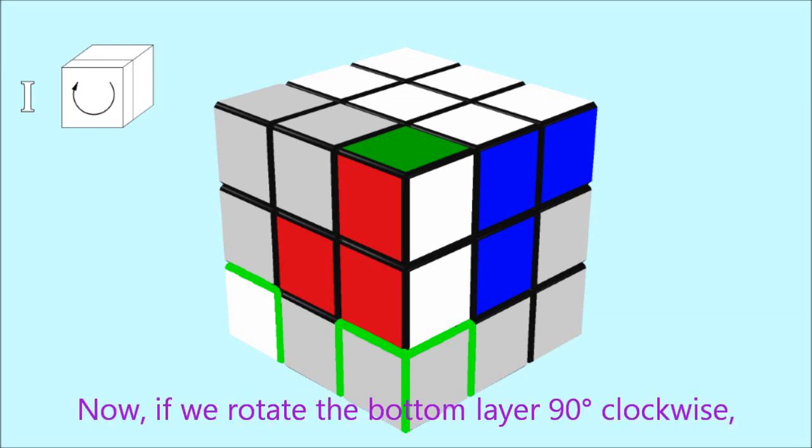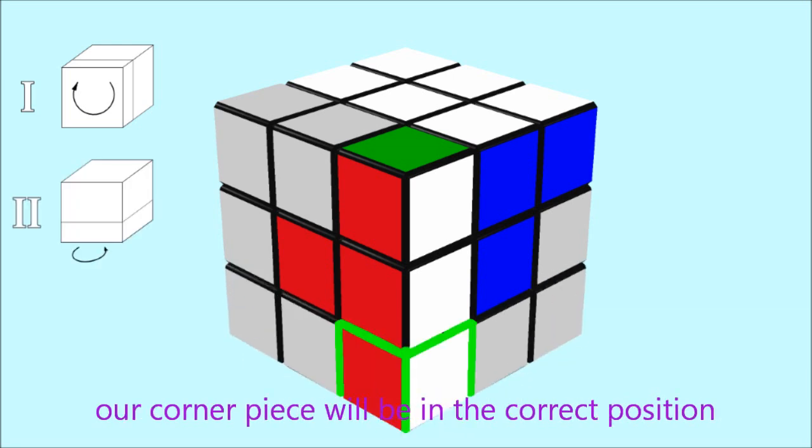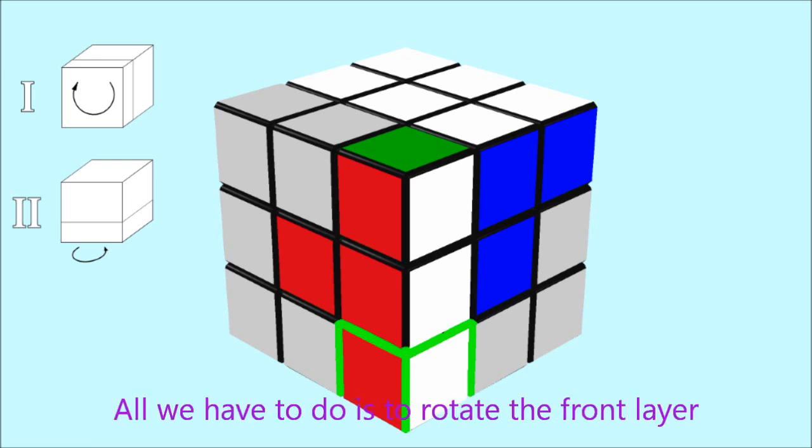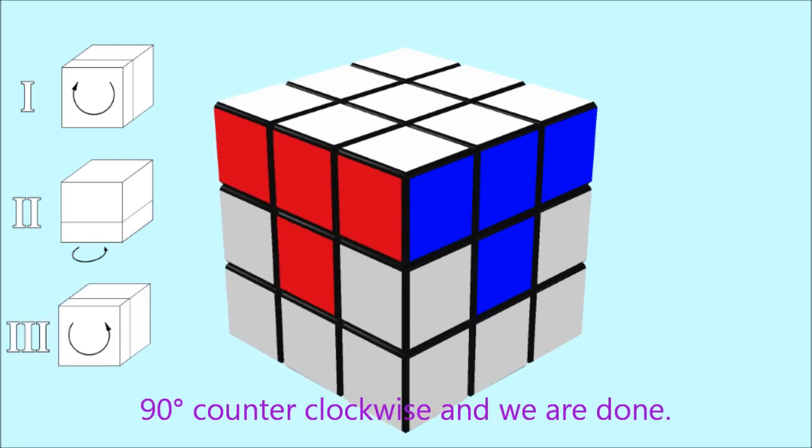Now, if we rotate the bottom layer 90 degrees clockwise, our corner piece will be in the correct position and have the correct flip. All we have to do is to rotate the front layer 90 degrees clockwise and we are done.